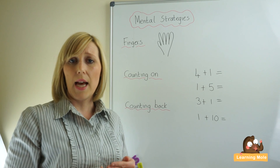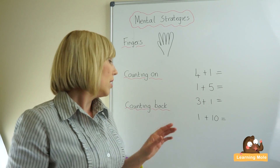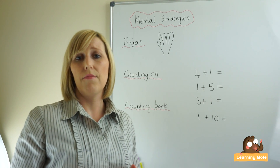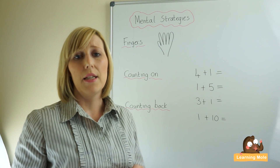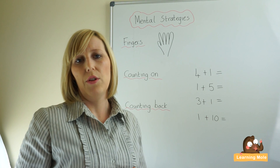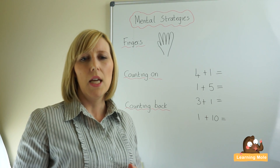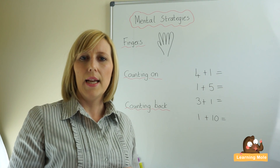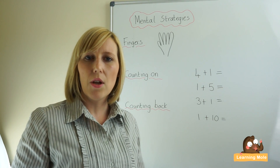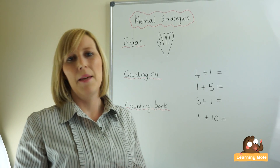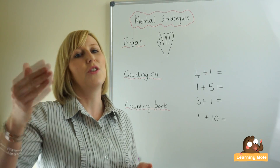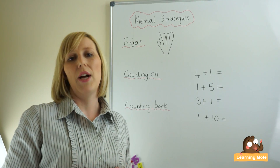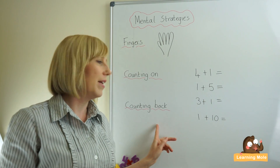Go through that and practice it, then think about counting back. Before introducing this method, you need to ensure your child can actually count back. Counting back is a lot more difficult for children and does take a while and a lot of practice. You can play little games like rockets blasting off — ten, nine, eight, seven, six, five, four, three, two, one — and make sure your child is secure with that before starting this strategy.